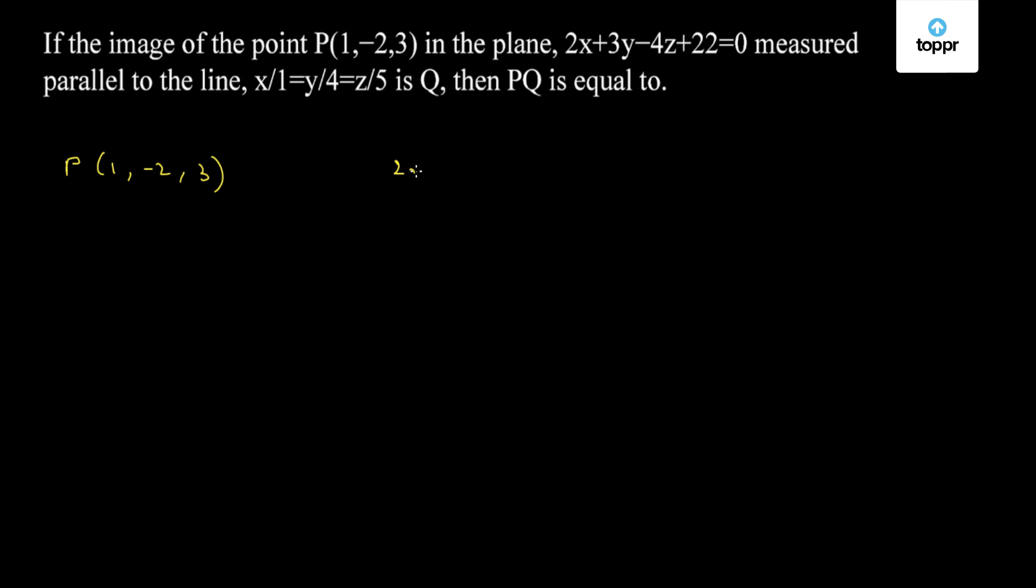ratios of the plane 2x plus 3y minus 4z plus 22 equal to 0 are 2, 3, -4. Now the line passing through point P along the line x/1 = y/4 = z/5